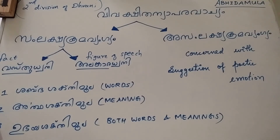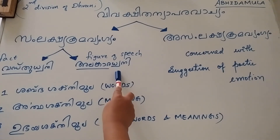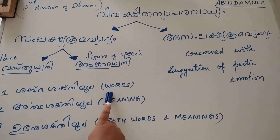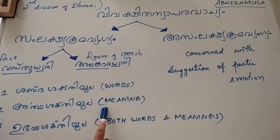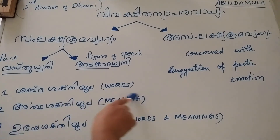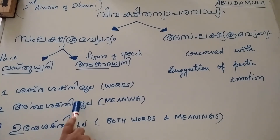As given in your notes, the type of Dhvani called Samlakshya Krama Vangya is again subdivided into Vastu Dhvani, where a fact is suggested, and Alankara Dhvani, where the suggested element is a figure of speech. Samlakshya Krama Vangya can also be classified from another point of view into that based on words — Sabda Shakti Mula — and that based on meanings — Artha Shakti Mula. In Sabda Shakti Mula, the actual words used are vital to the suggestion and cannot be substituted by their synonyms. In Artha Shakti Mula, the contextual factors and socio-cultural background are important in bringing out the suggestion.